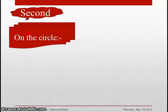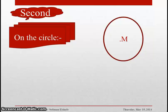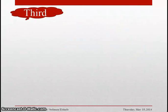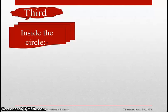Second: a point on the circle. If we have a circle M in the plane and a point B in the same plane, such that the distance between point B and the center of the circle equals the radius of the circle, it means point B lies on the circle. And vice versa: if the distance between a point and the center equals the radius, the point lies on the circle.